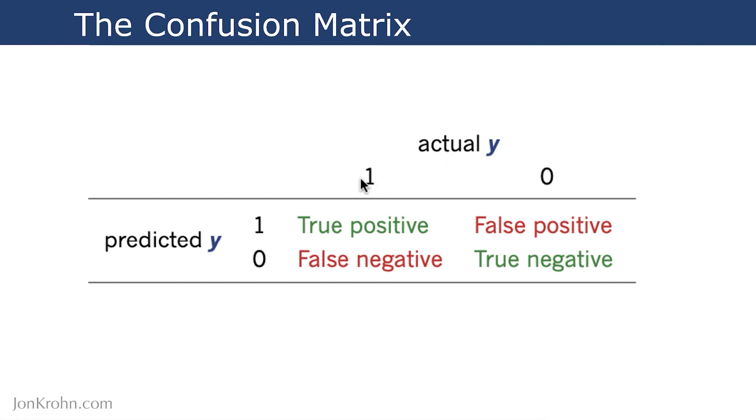Let's say one corresponds to there really being a hot dog in an image, and zero corresponds to there really not being a hot dog in the image.